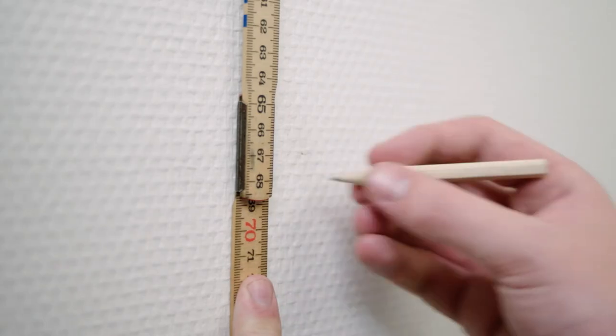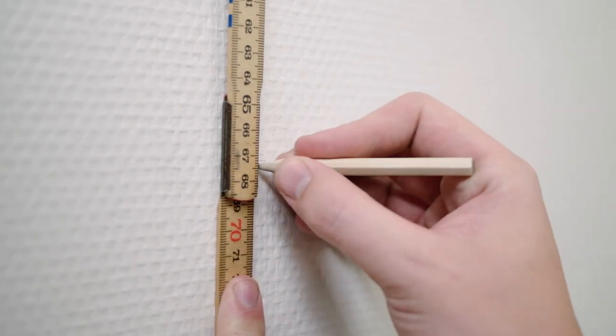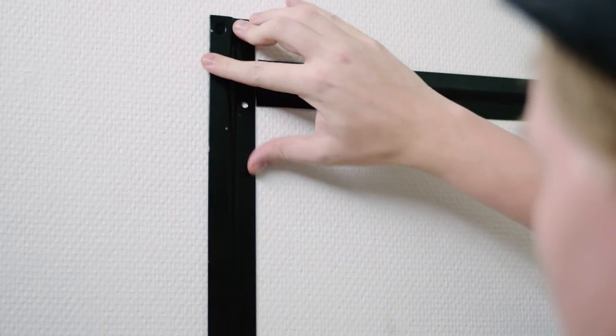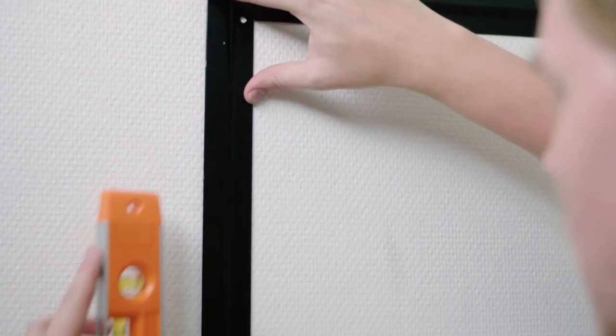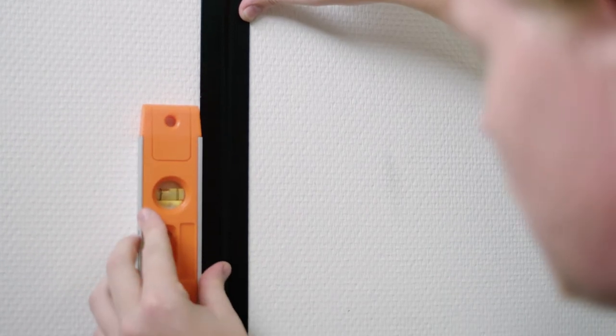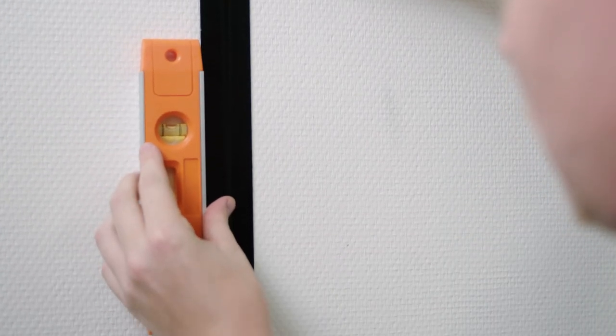Mark the distance on the wall. Ensure parallel placement relative to the upper rail, and keep in mind that the screw holes are located lower than the top of the rail.